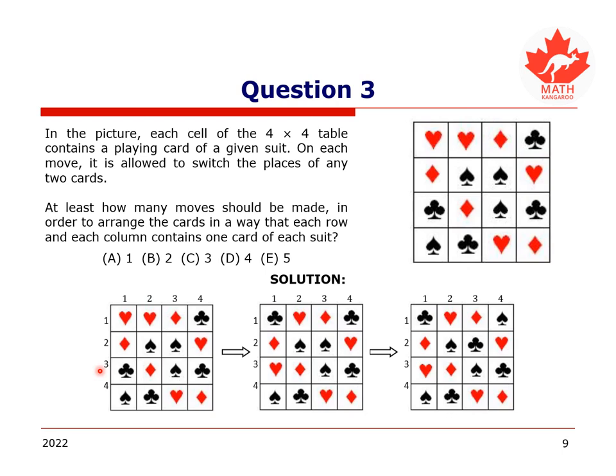It is therefore possible to solve the problem by two moves. Using the diagrams and numbering the rows and columns will help explain how we can do this. For the first move, we exchange the card in the first row and the first column with the card in the third row and the first column, as such.